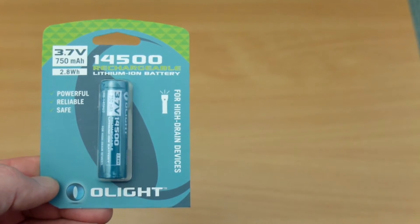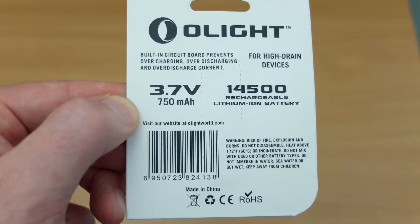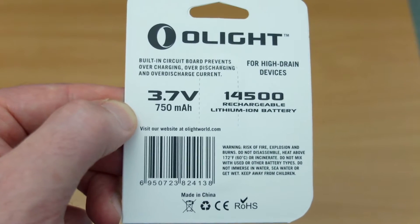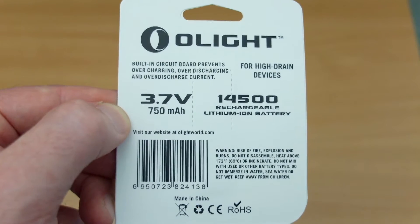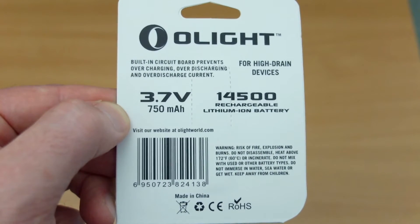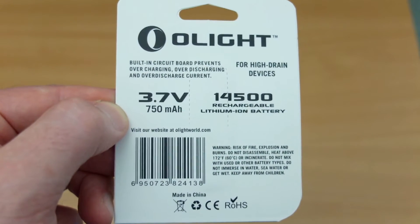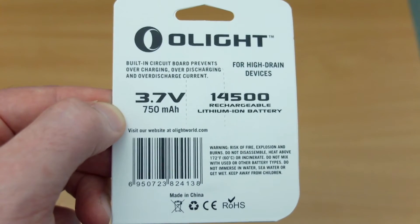So I will be running some tests later on just to check the capacity on the cells. On the back, you will see not too much information, but it does tell you that you have circuit protection, and that stops it from over-discharging, overloading, and over-charging the cells, so they're very safe cells to use in that regard.